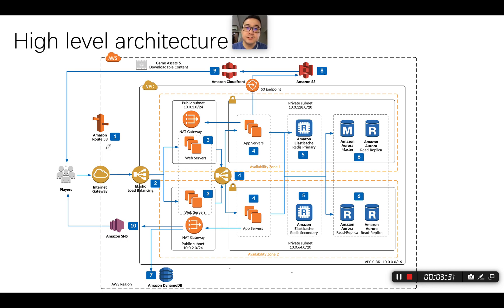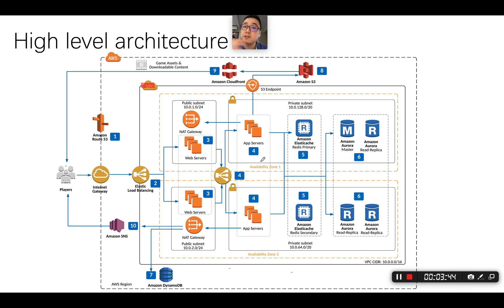Hi, today I'm going to talk about how we're going to build the gaming app on AWS. So in terms of the architecture, it's pretty much similar. You're going to have the VPC, and inside the VPC, they're going to have multiple availability zones. Inside each of the availability zones, they're going to have the application in multiple tiers.